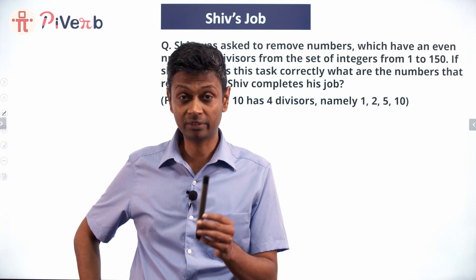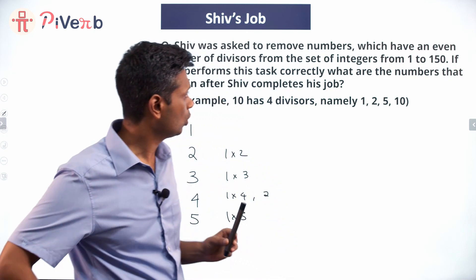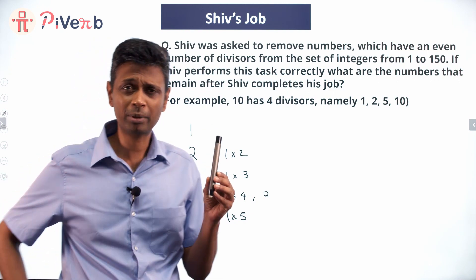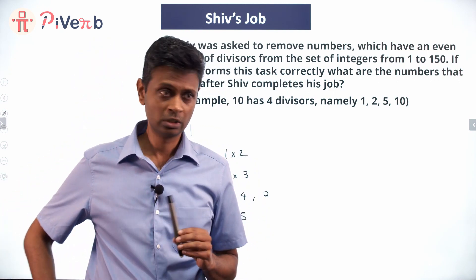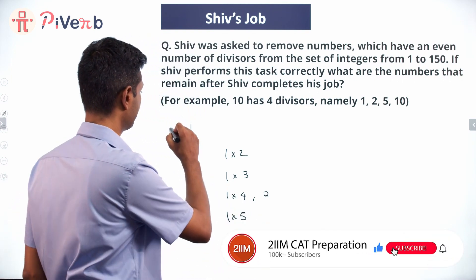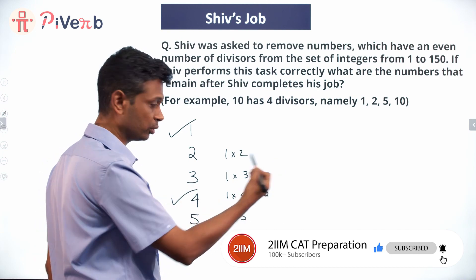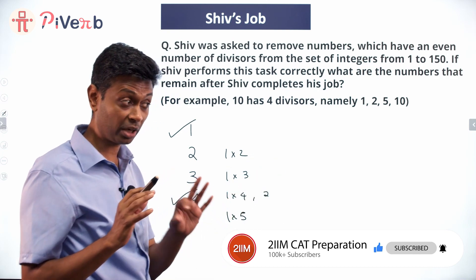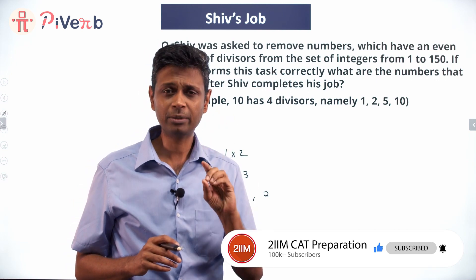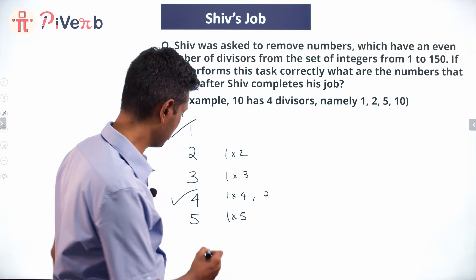One will have exactly one factor. So all prime numbers will disappear — he was asked to remove numbers with an even number of factors, and every prime number has exactly two factors. So prime numbers will not feature on this list. Let's think about composite numbers.